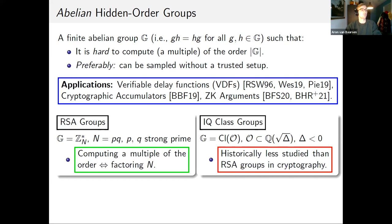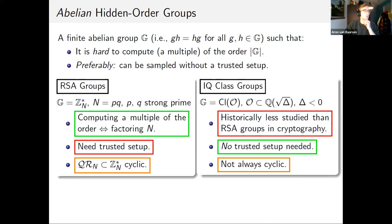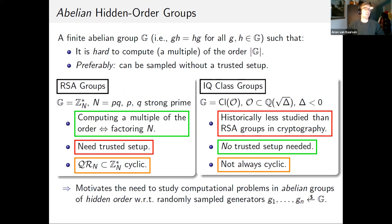Imaginary quadratic class groups have historically been less studied than RSA groups in cryptography, but they have the benefit of not needing a trusted setup, whereas RSA groups do need a trusted setup. On the other hand, if we sample a random imaginary quadratic class group, it's not always going to be cyclic, and we have no efficient way to check if such a randomly sampled group is cyclic. This motivates the need to study computational problems in abelian groups of hidden order, not just cyclic groups, and with respect to multiple randomly sampled generators of the group.